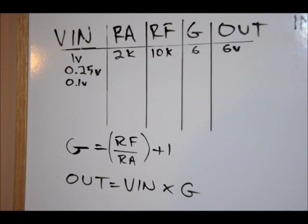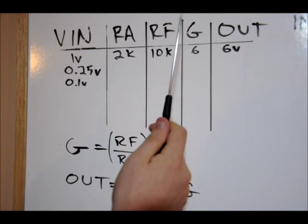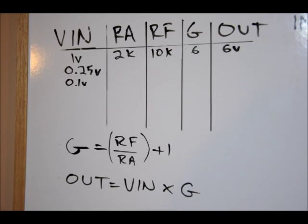So again, steps in finding out our output voltage is based on two easy steps. Determine your RA and RF, what your input voltage is, then determine your gain, then determine your Vout. So what I will do is I will write down a value for RA and RF, and once I've done that, you pause it and determine your gain, then determine your output voltage.